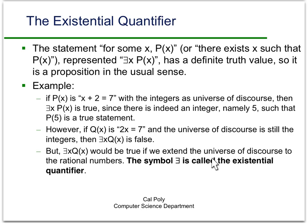On the other hand, if we had a different domain of discourse — namely the rational numbers — then 'there exists x such that Q(x)' would be a true statement. Because with rational numbers, we could let x be three and a half, and then two times x would equal seven. The symbol — a backwards capital E — is called the existential quantifier.